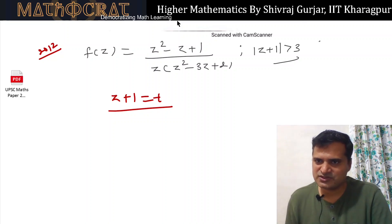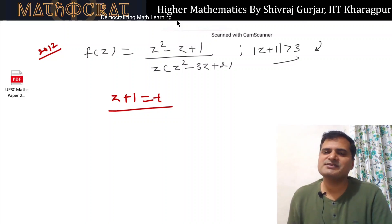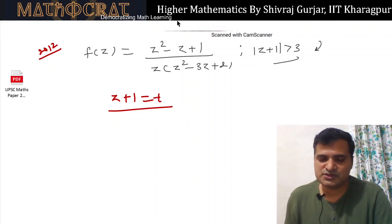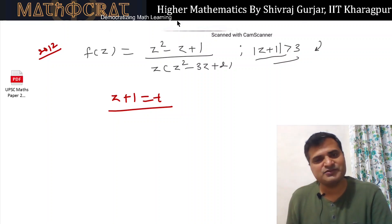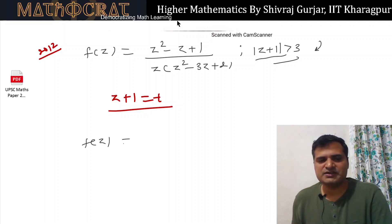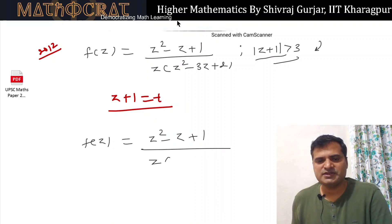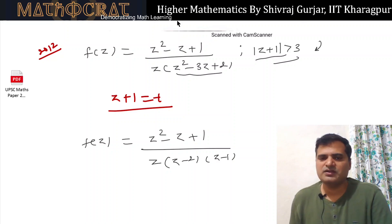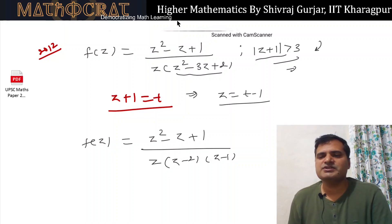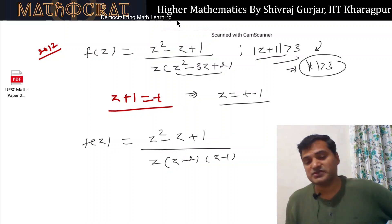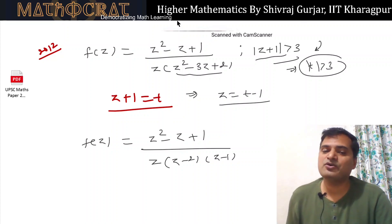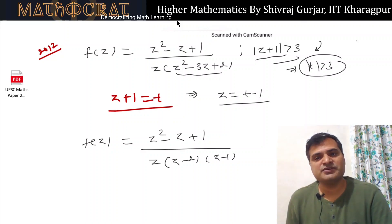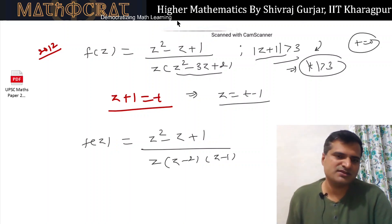This question is essentially based on Laurent series. Sometimes the question is asked — like in 2012 — to find all possible expansions. They gave more than one region. But here we are asked for this particular region |t| > 3, so let's work with that.